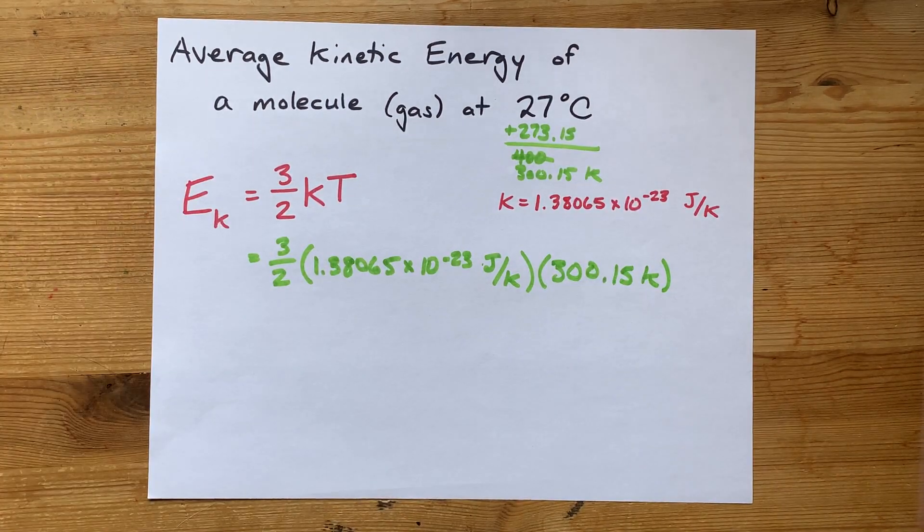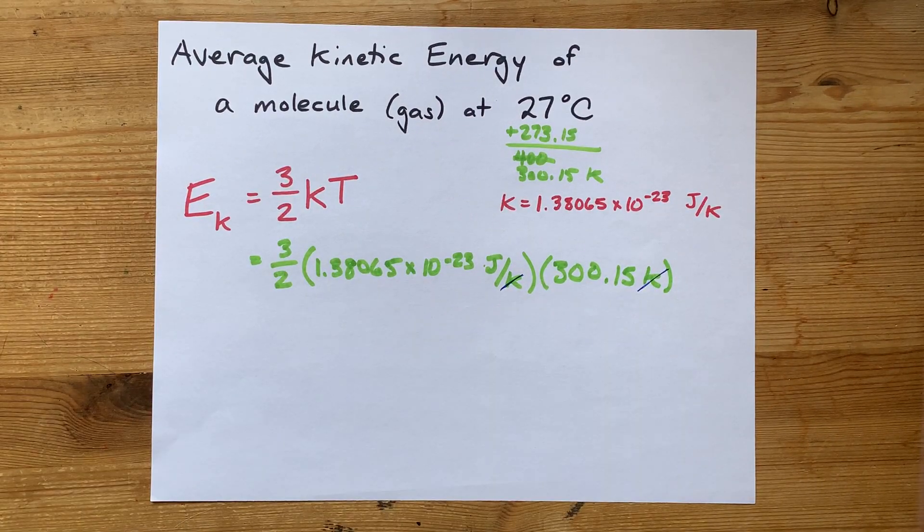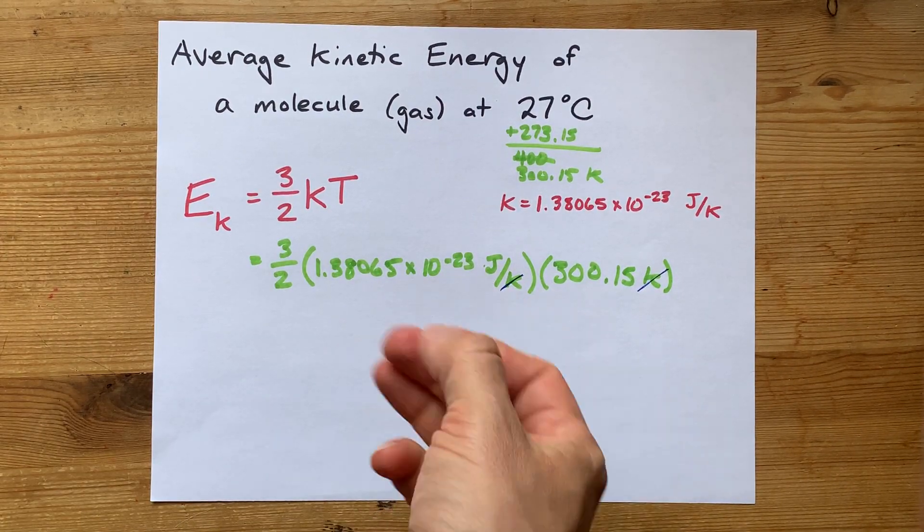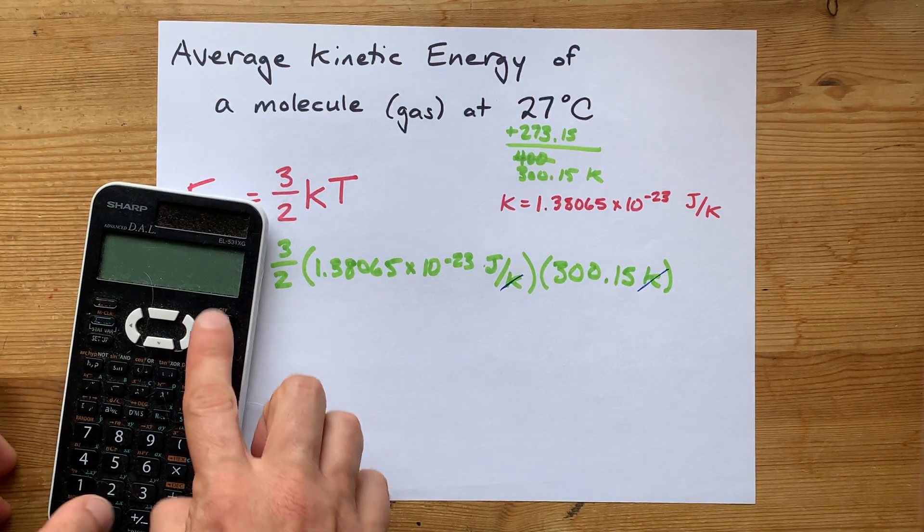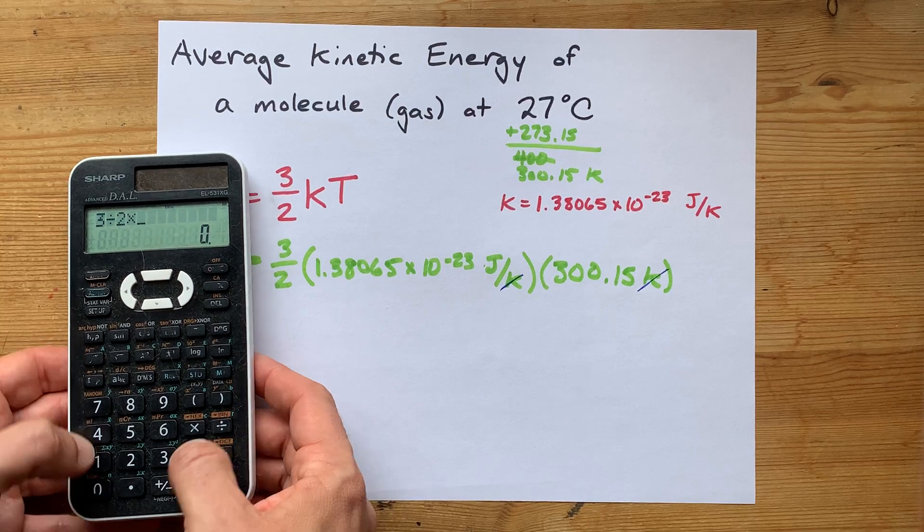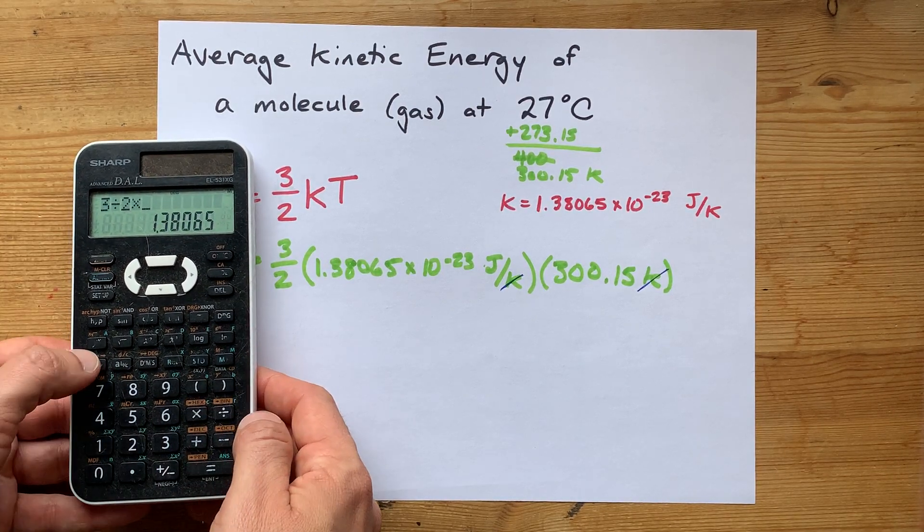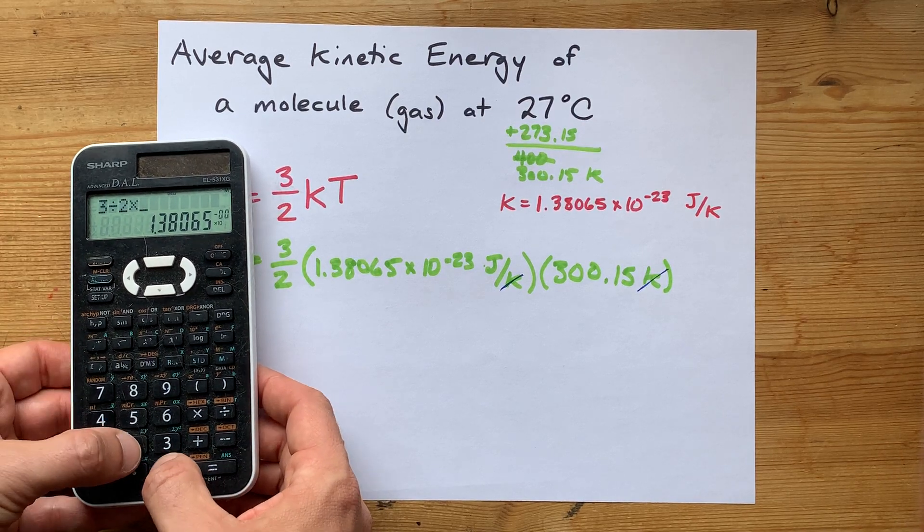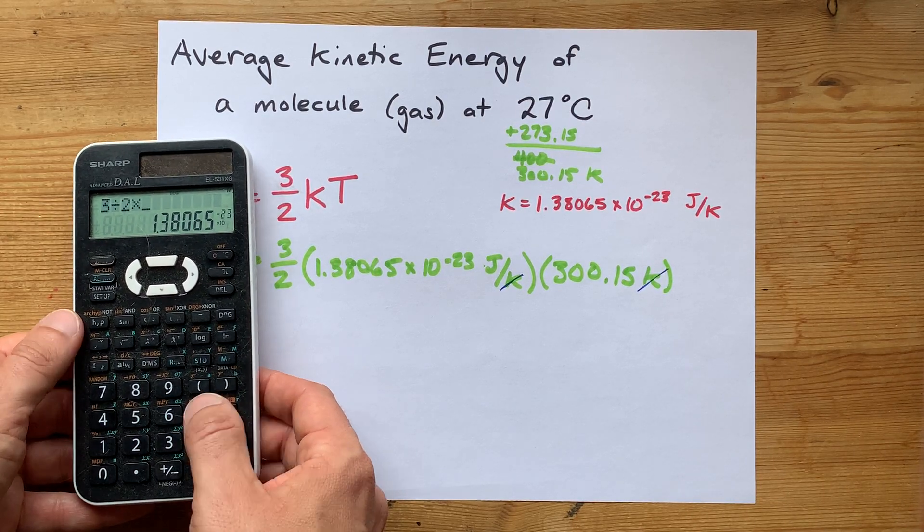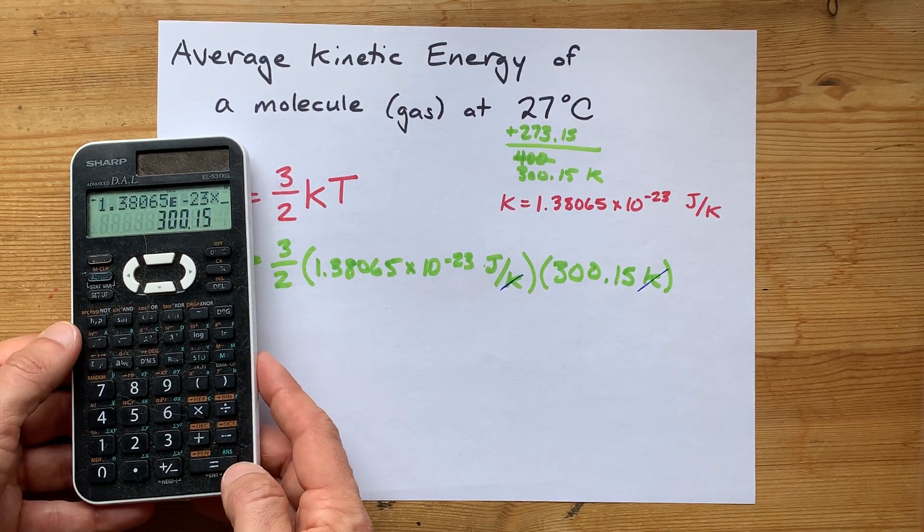Note that the units of Kelvin and per Kelvin cancel each other out. We're going to be left with an answer in joules. That's exactly what we want. Let's do this together. I got 3/2 times 1.38065 times 10 to the power of negative 23, and times that by the Kelvin temperature, 300.15.